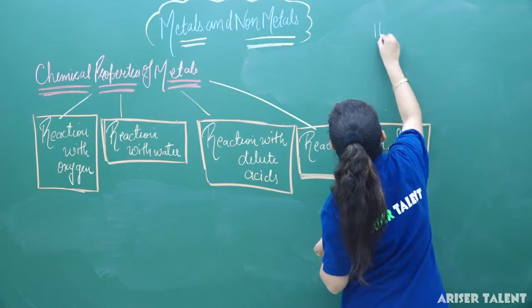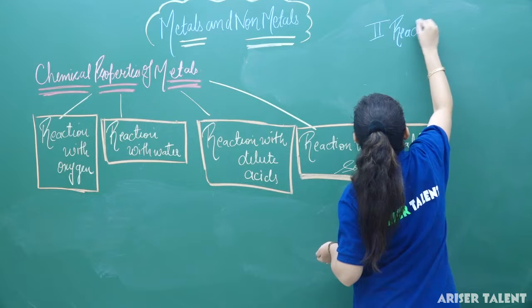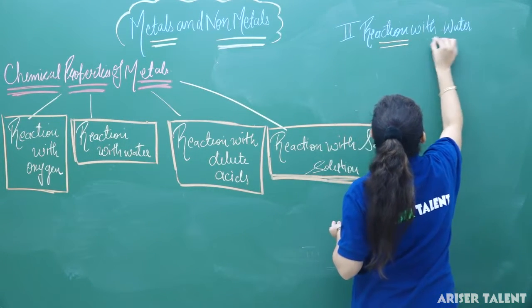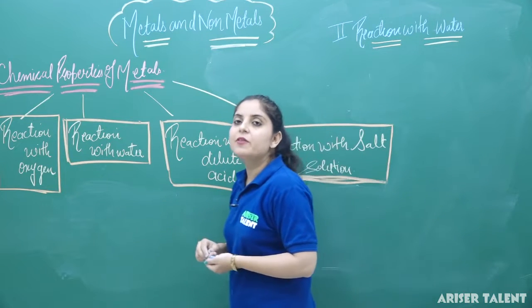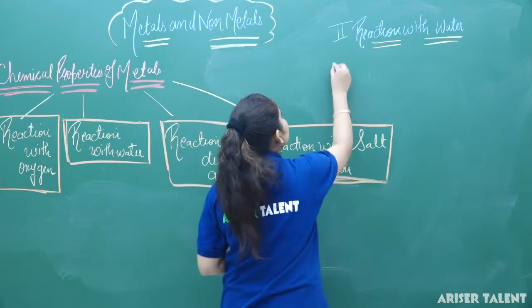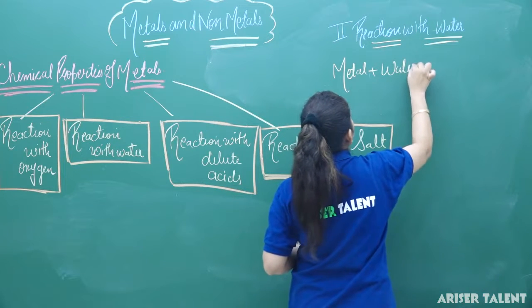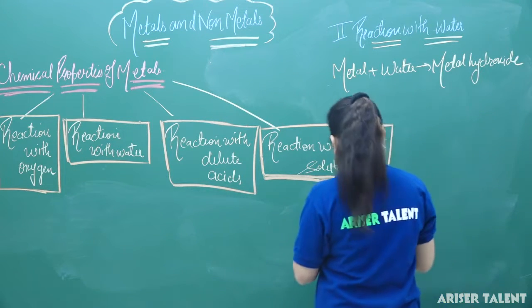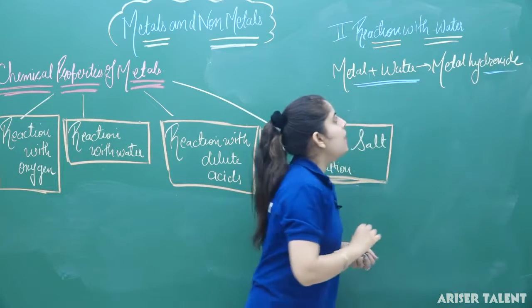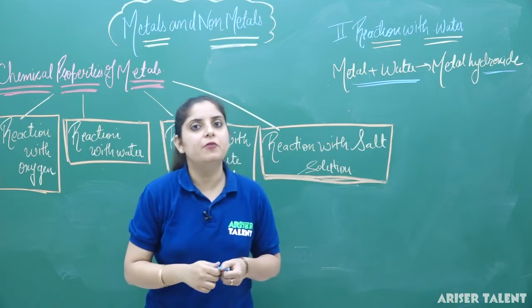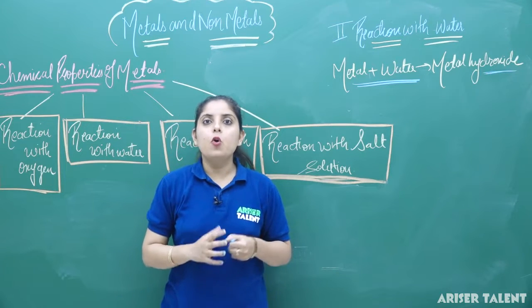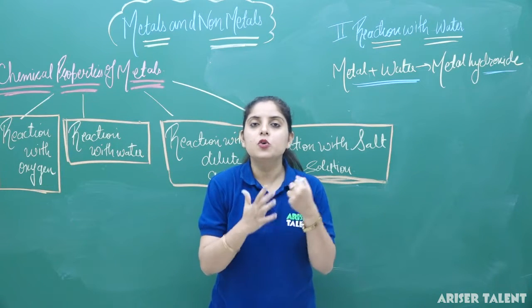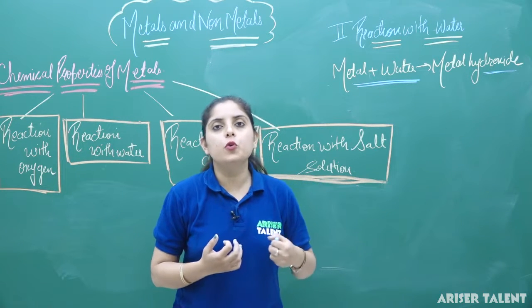The second part is reaction with water. Whenever any metal is going to react with water, it will definitely form the hydroxide. Whenever a metal reacts with water, it forms metal hydroxide. Now we will learn how different metals show different behavior under different conditions. Some metals react with cold water, some react with hot water, and some react with steam. The first case we are considering is reaction with cold water.